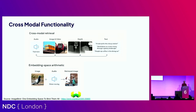You can do embedding space arithmetic. You can say I have this image of a pigeon and this sound of a motor revving — what image do these concepts look like? And you get back that image on the right-hand side. All of this seems really magical, but it's all possible with the technology we have right now.